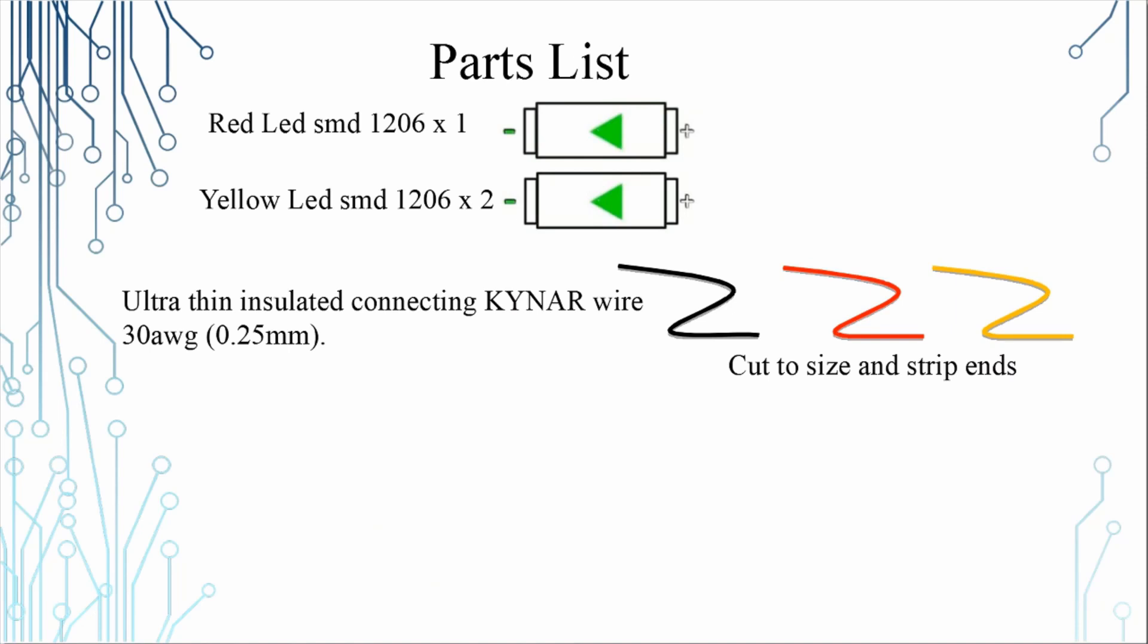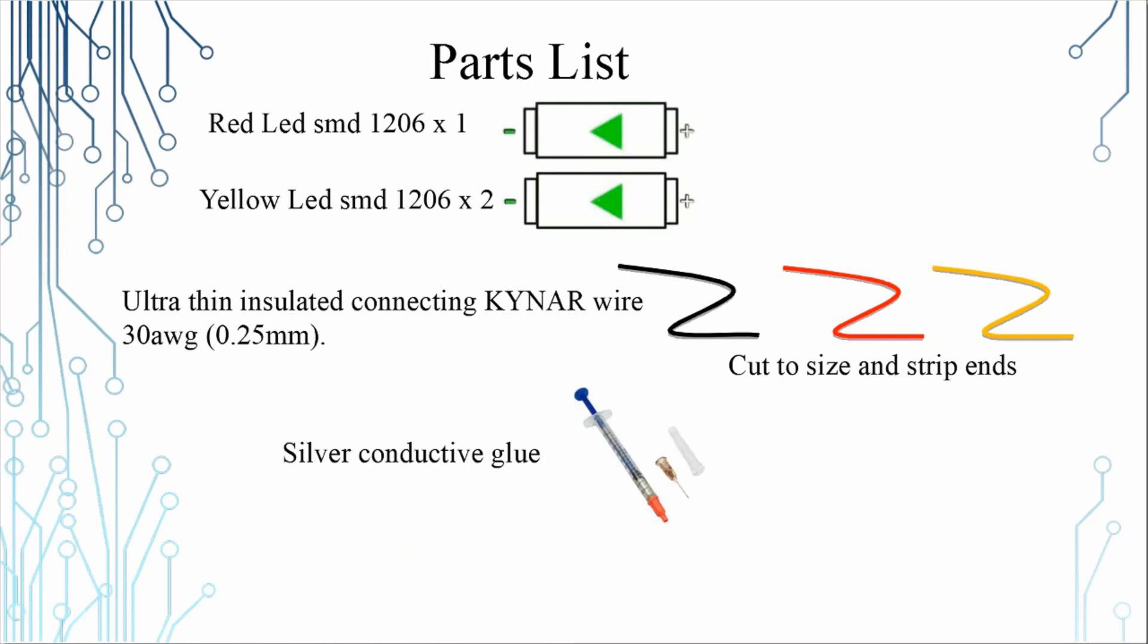Another stuff we're using today is something called conductive paint or glue. It comes from China Post. You can have a common negative or a common positive to suit your wiring. MERG uses a common positive and that's the method I'm going to use today.